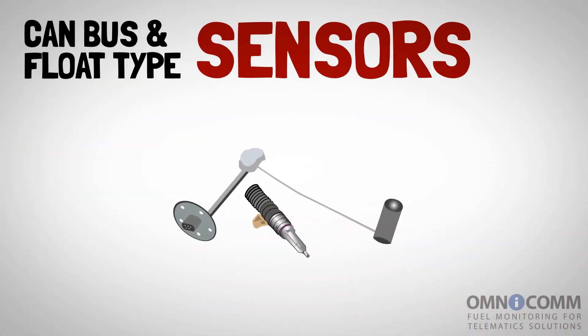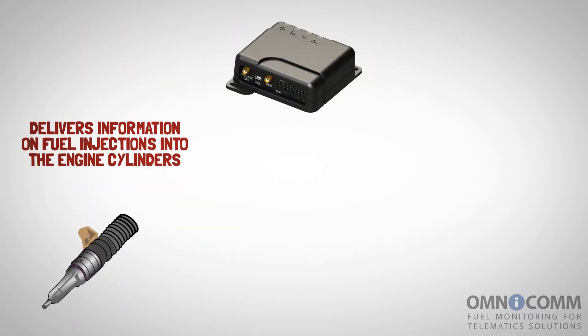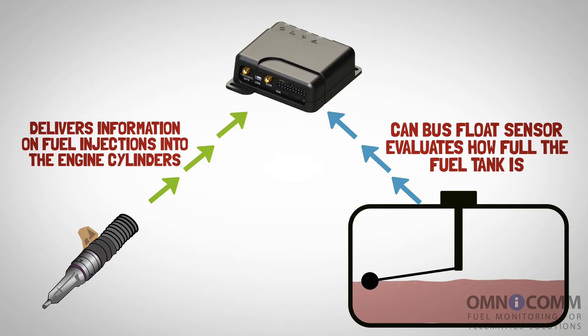CAN Bus Injector and Float Type Sensors. The controller area network bus is the nervous system of a vehicle, connecting sensors with the onboard computer. The CAN Bus Injector Sensor delivers information on fuel injections into the engine cylinders, helping to measure fuel consumption during the drive. The CAN Bus Float Sensor evaluates how full the fuel tank is.